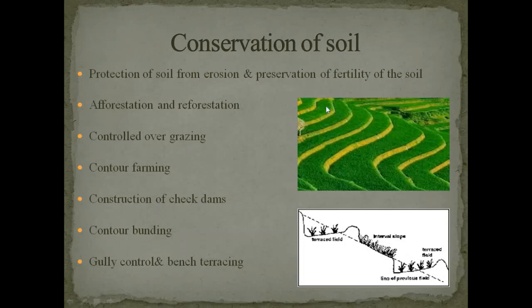Third, contour farming — making step-like terraces on slope areas so that the speed of water flow reduces, enabling farming and helping to avoid soil erosion. Fourth, construction of check dams — by constructing check dams, the flow and speed of river water reduces, and as a result soil erosion also reduces. Fifth, contour bunding.